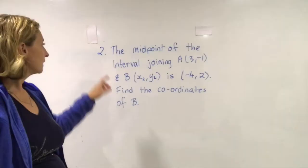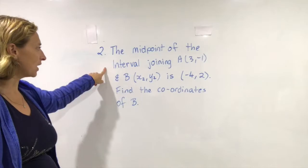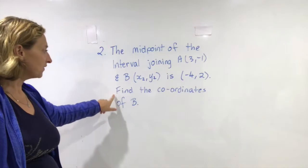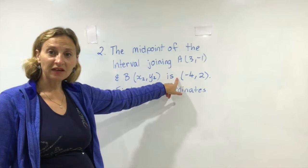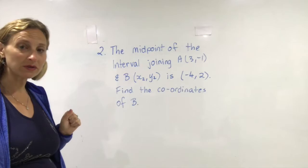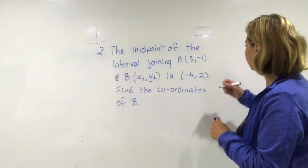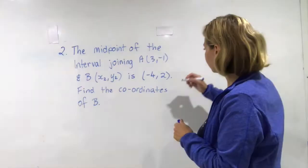The other types of questions that you get will look something like this. The midpoint of the interval joining A(3, -1) and B(x2, y2) is (-4, 2). Find the coordinates of B. Well this is an interesting question because they have told us that the interval is AB and the actual midpoint is (-4, 2). So this might be one of the types of questions where you need to work backwards. Let's draw a picture first. It's always good if we have a diagram to look at.